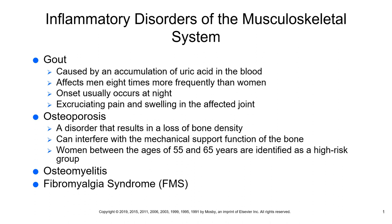Osteoporosis can affect the vertebrae, the neck area of the femur, the pelvis, the hands, and the wrists. People who are most at risk are small-framed, non-obese, white of European descent or Asian race.